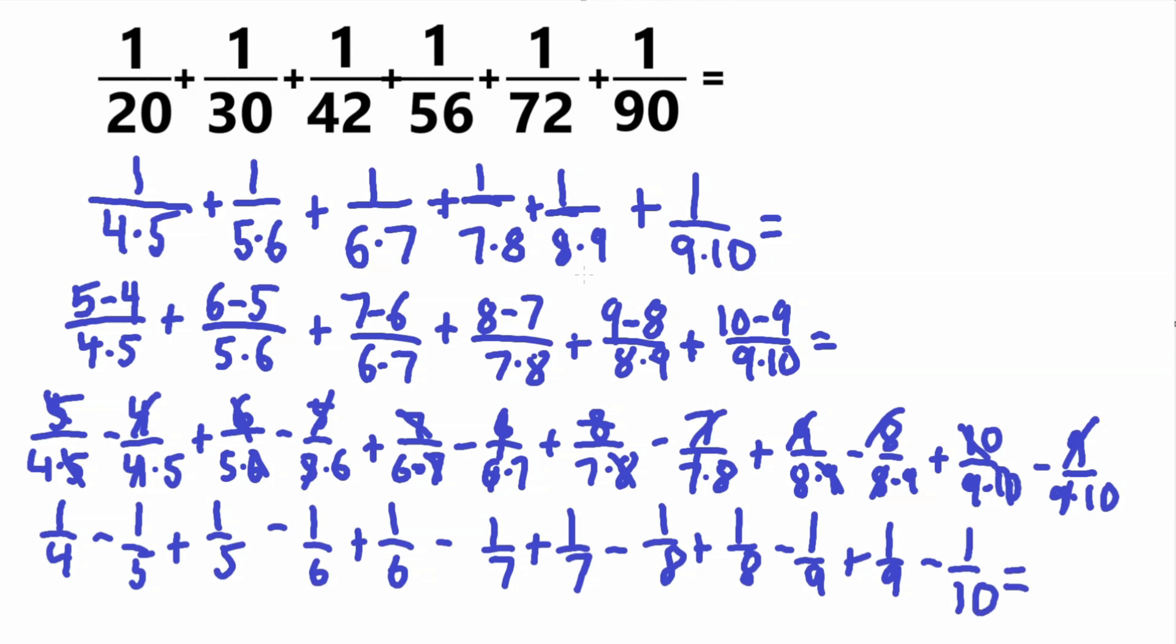And now, so here we have a lot of more fractions. So we still have a lot of fractions, but now look, here is negative 1 fifth, here's positive 1 fifth, they cancel out. Here is negative 1 sixth, positive 1 sixth, they also cancel out. Negative 1 seventh, positive 1 seventh, negative 1 eighth, positive 1 eighth, negative 1 ninth, positive 1 ninth, and that leaves us with positive 1 fourth and minus 1 tenth.